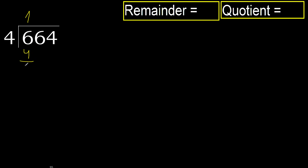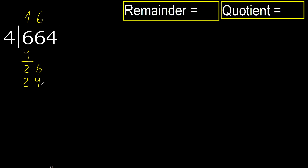Subtract, next 26. 4 multiplied by 7 is 28, 28 is greater. Multiplied by 6, 24 is not greater.